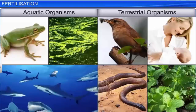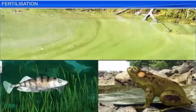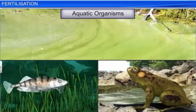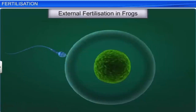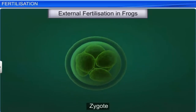Fertilization, on the other hand, occurs in a wide variety of aquatic as well as terrestrial organisms. However, the way fertilization occurs in aquatic organisms is very different from the way it occurs in terrestrial organisms. In most aquatic organisms, including algae, fish, and amphibians such as frogs, fertilization is external — where the male and female release their gametes in water, and the fusion of the gametes as well as the formation of the zygote occurs outside the body of the organism, in an external medium such as water.